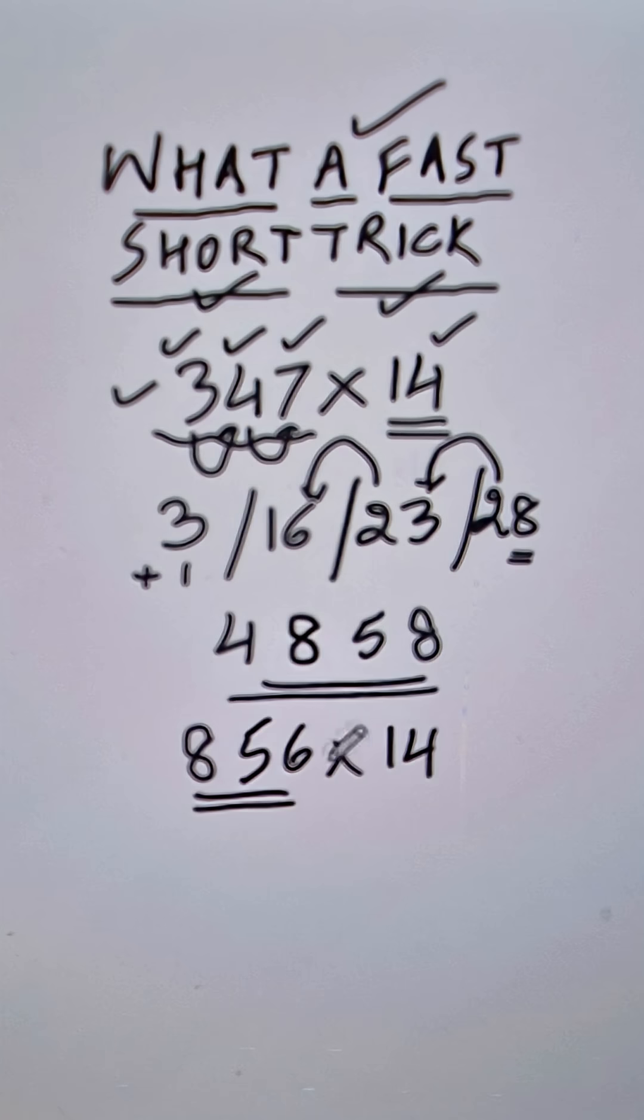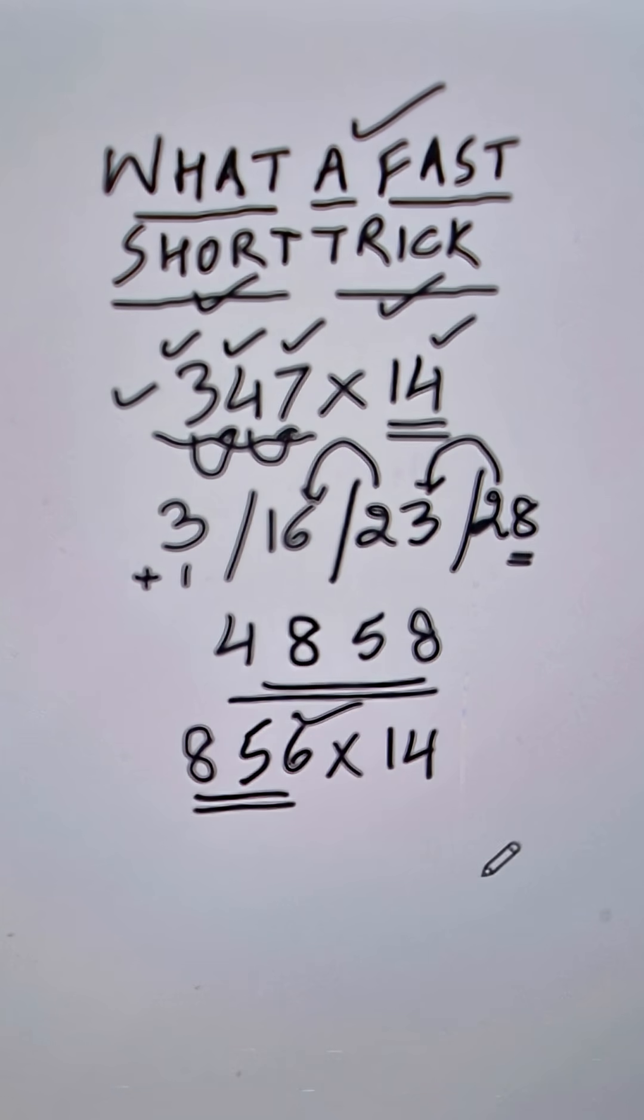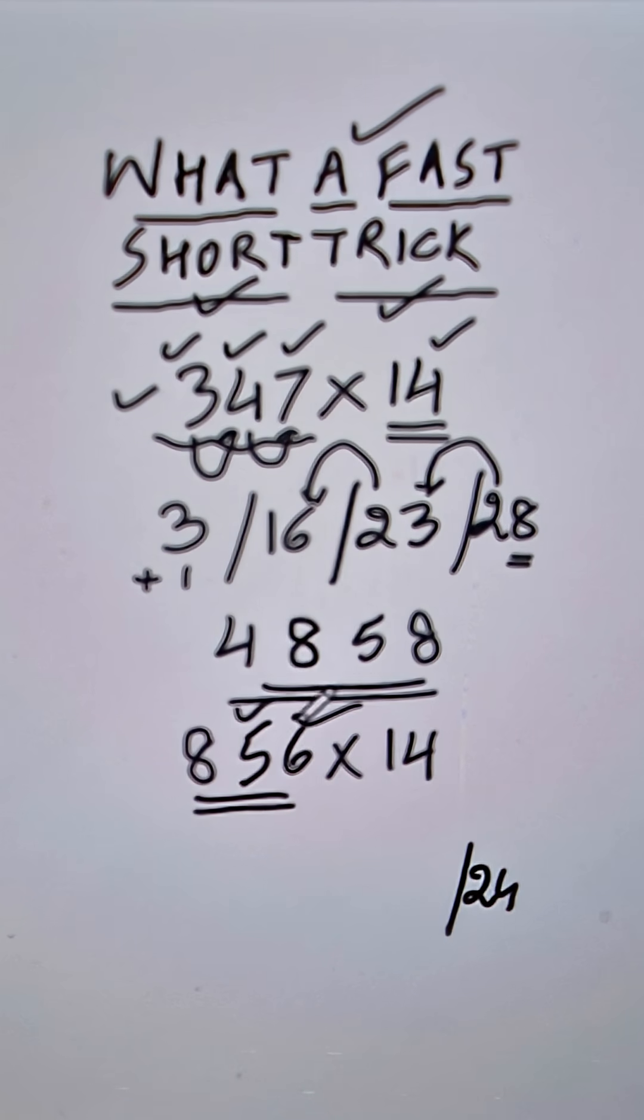856. Now 6 times 4 first of all is 24, followed by 5 times 4 which is 20, add the next number, you get 26.